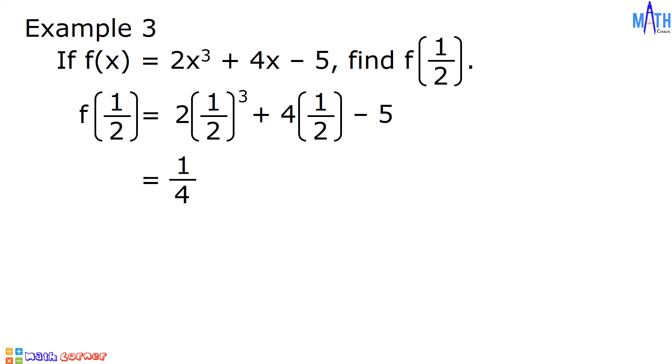Next, 4 times 1/2 is equal to 4/2 and 4/2 or 4 divided by 2 is equal to 2. It means plus 4 times 1/2 is equal to plus 2. And then we have minus 5. Since 2 minus 5 is equal to negative 3, then we have 1/4 minus 3.